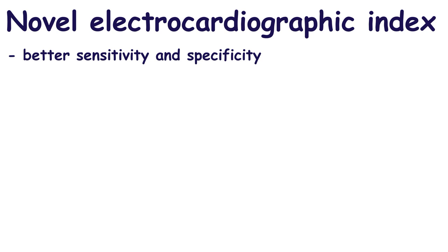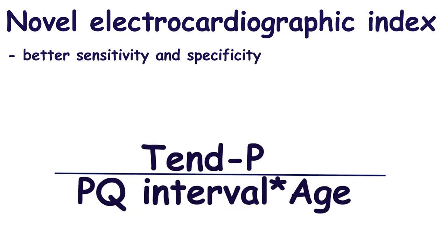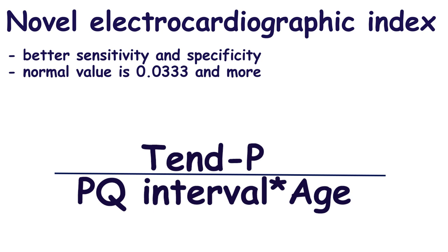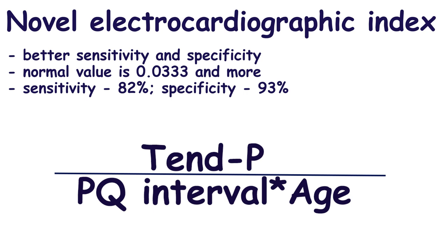To increase the sensitivity and specificity of these ECG intervals, a novel electrocardiographic index was discovered: TpP divided by the PQ interval, times H in brackets. The normal value is 0.0333 or more. This index demonstrated high diagnostic accuracy for the diagnosis of diastolic dysfunction, with a sensitivity of 82% and a specificity of 93%.